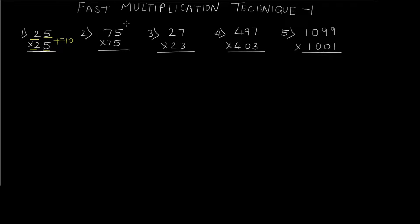Now the trick can be applied. First, multiply the units digits: 5 times 5 equals 25 — write that down. For the tens part, add 1 to the tens digit and multiply it with the original tens digit: 2 plus 1 is 3, and 2 times 3 is 6. So the final answer is 625. This gives you the answer in seconds once you identify the type of question.